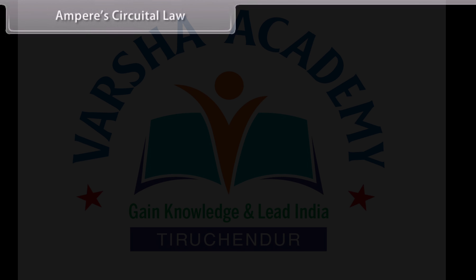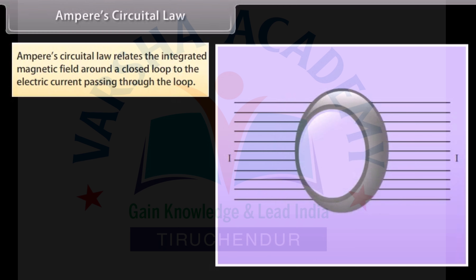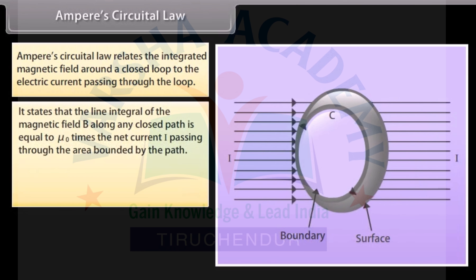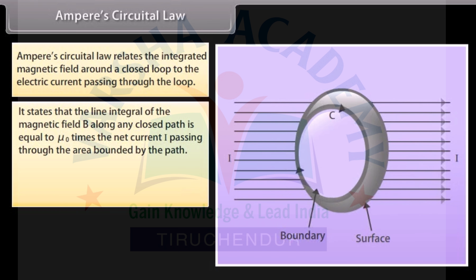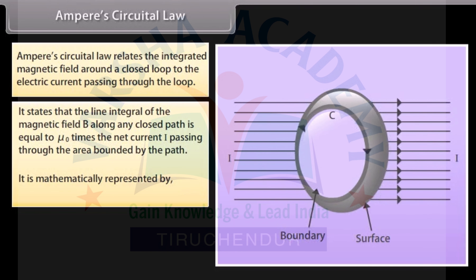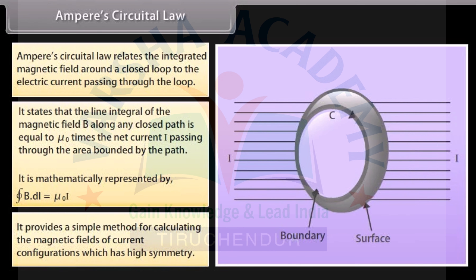Ampere's Circuital Law relates the integrated magnetic field around a closed loop to the electric current passing through the loop. It states that the line integral of the magnetic field B along any closed path is equal to mu naught times the net current I passing through the area bounded by the path. It is mathematically represented by the closed integral of B dot dL equals mu naught I. It provides a simple method for calculating the magnetic fields of current configurations which have high symmetry.